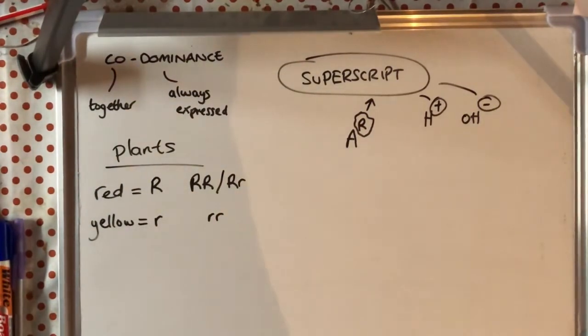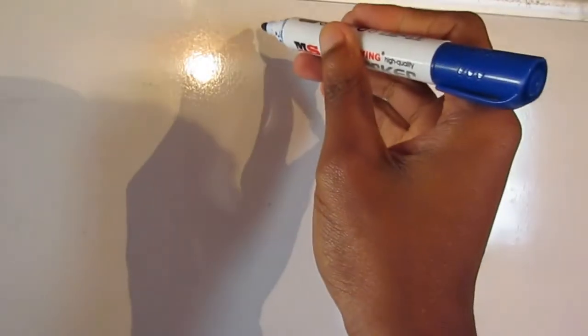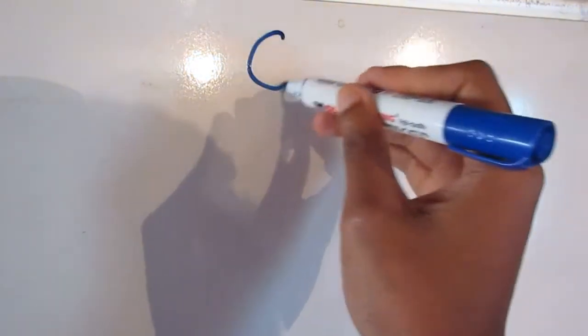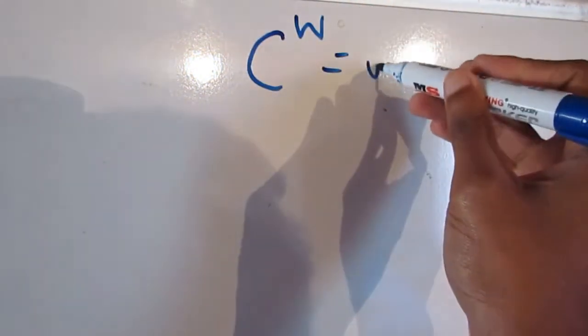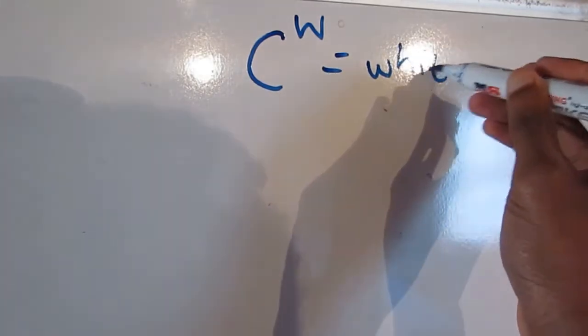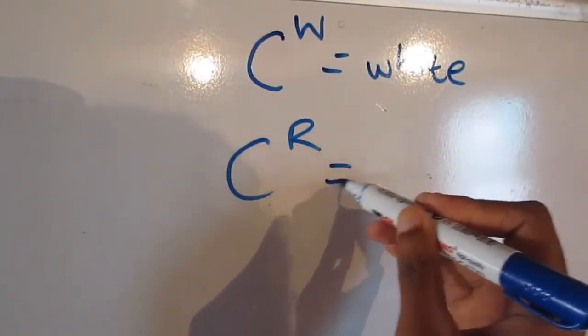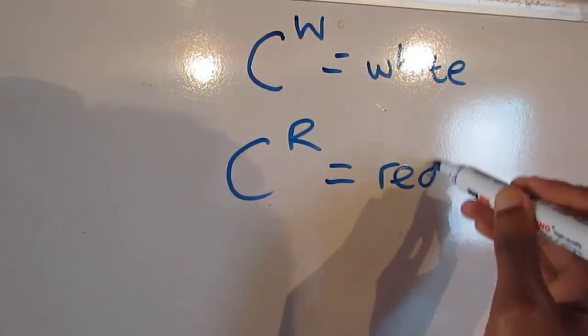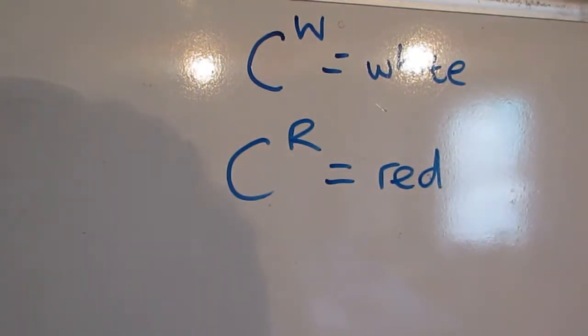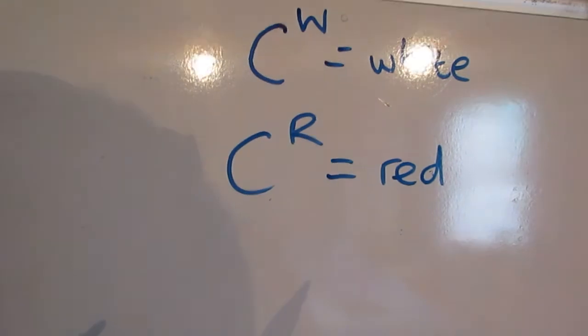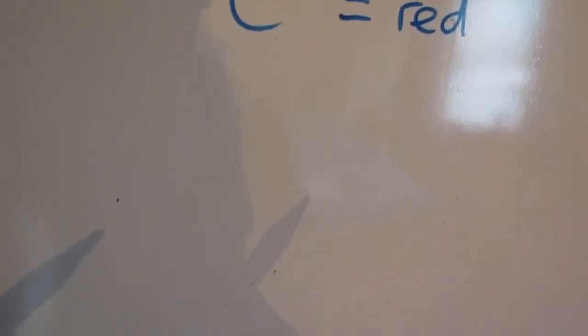Now the question is, how can you get this pink petal offspring? How does it come about? So let us use our Punnett square and genetic cross to show this. So this time I'm using, instead of A, I'm using C to represent color and again our R for red and W for white.